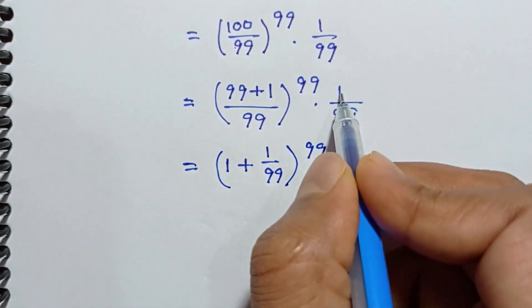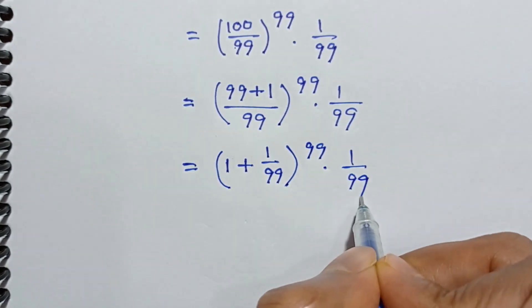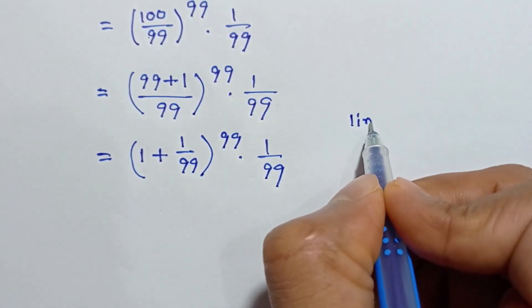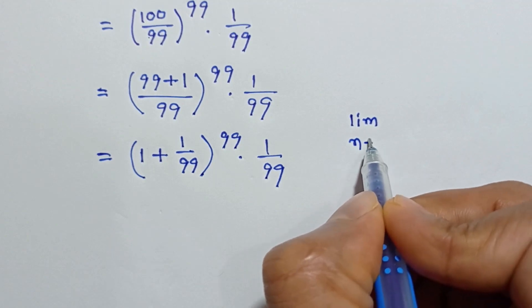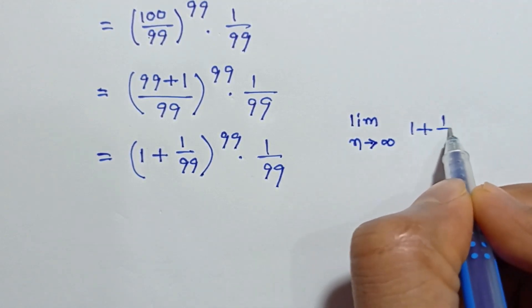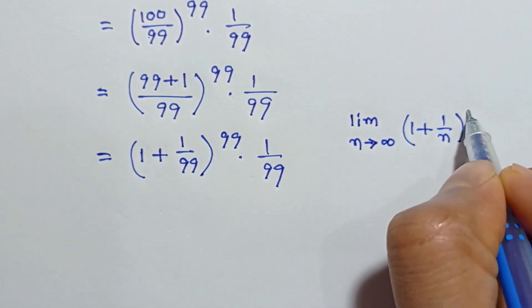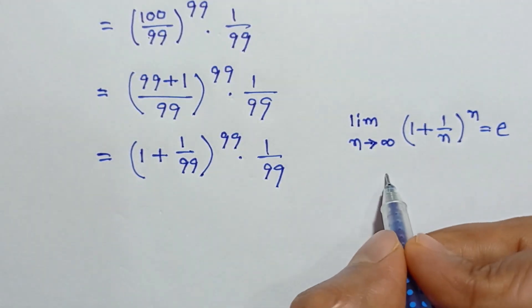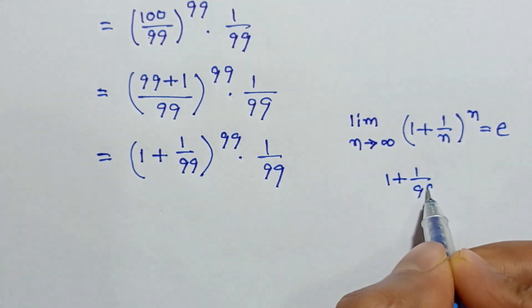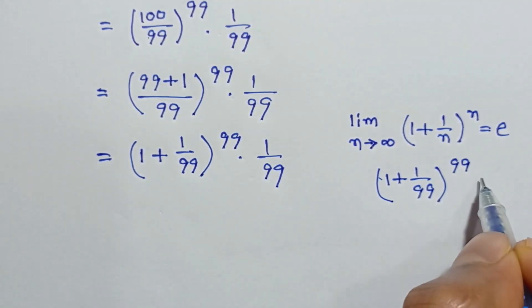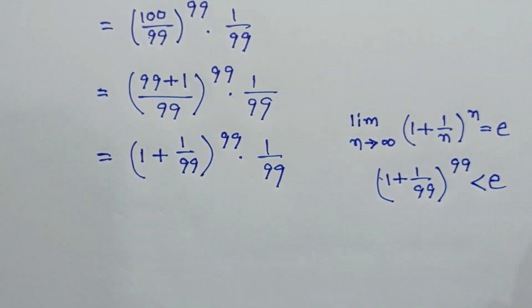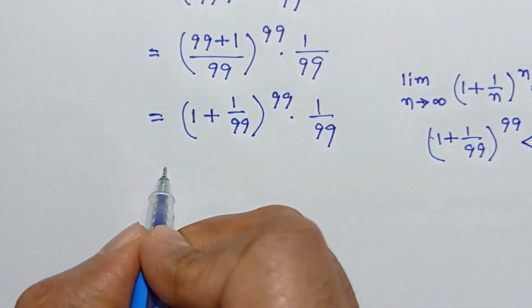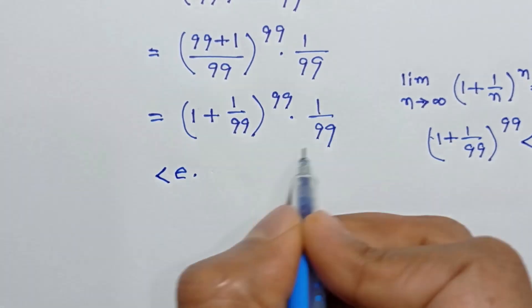Now we know the limit as n tends to infinity of (1 plus 1 over n) to the power n is equal to e. So for n equal to 99, (1 plus 1 over 99) to the power 99 is less than e. Therefore this expression is less than e times 1 over 99.